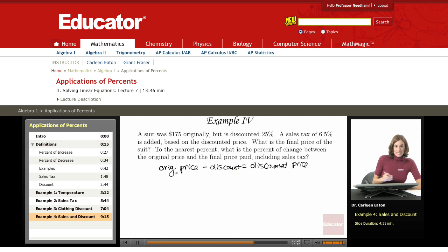Once I have that discounted price, I'm going to add the sales tax to that, not to the original price. The original price is $175, and the discount is 25%. So the amount of the discount will be 25% of $175, just writing it all as one equation. And that's going to give me the discounted price, which comes out to $131.25.